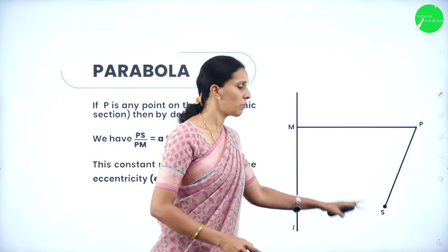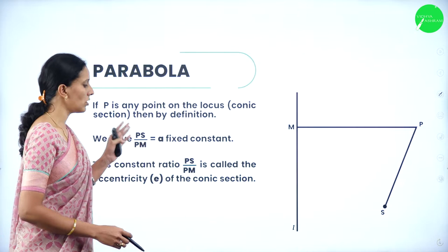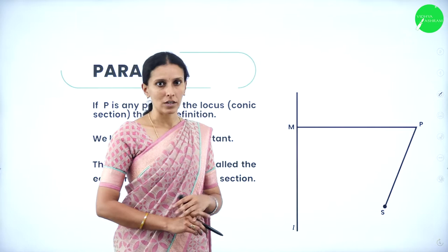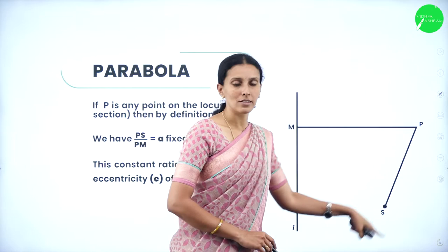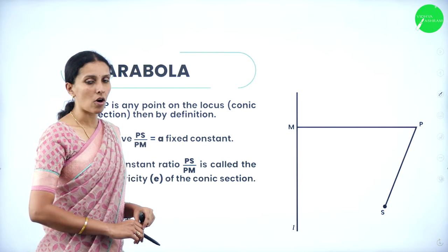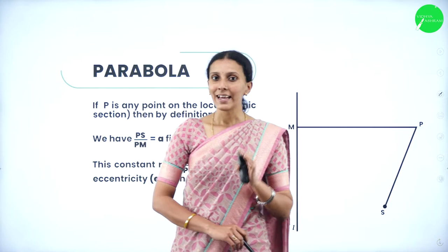According to the definition of the conic section, we can write PS/PM = e, which is a fixed constant. The ratio of these two distances will be some constant, and this constant ratio is called the eccentricity of a conic section, denoted by E.